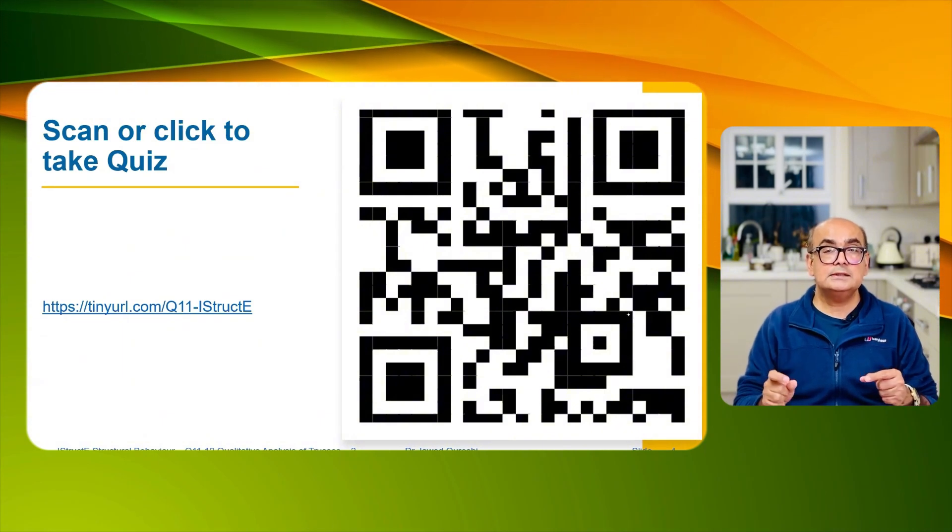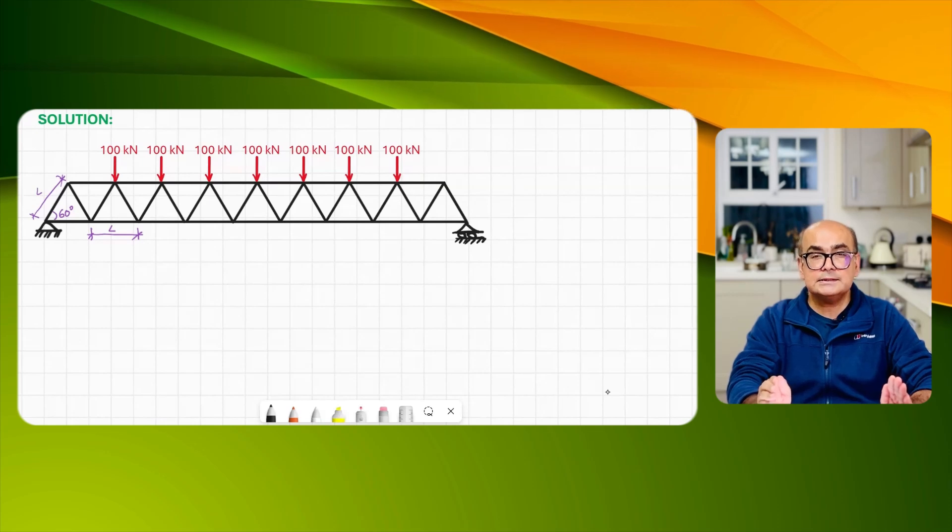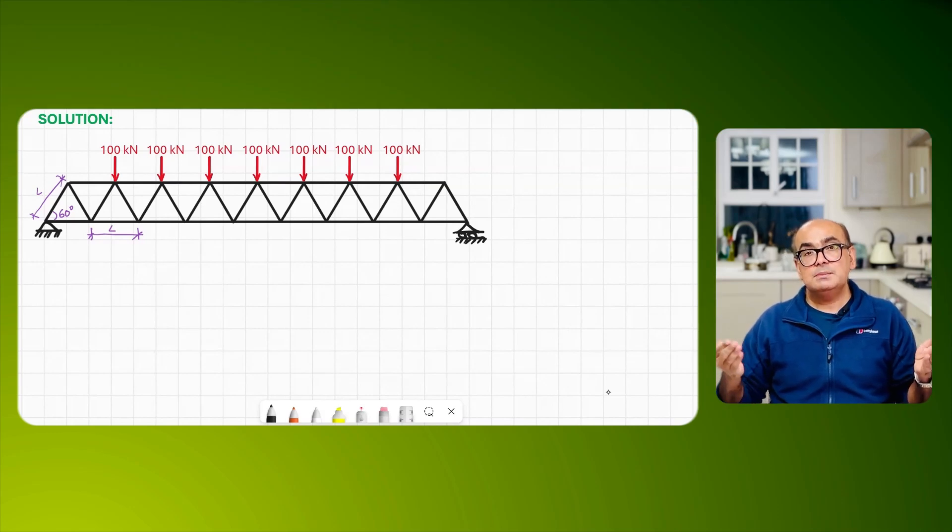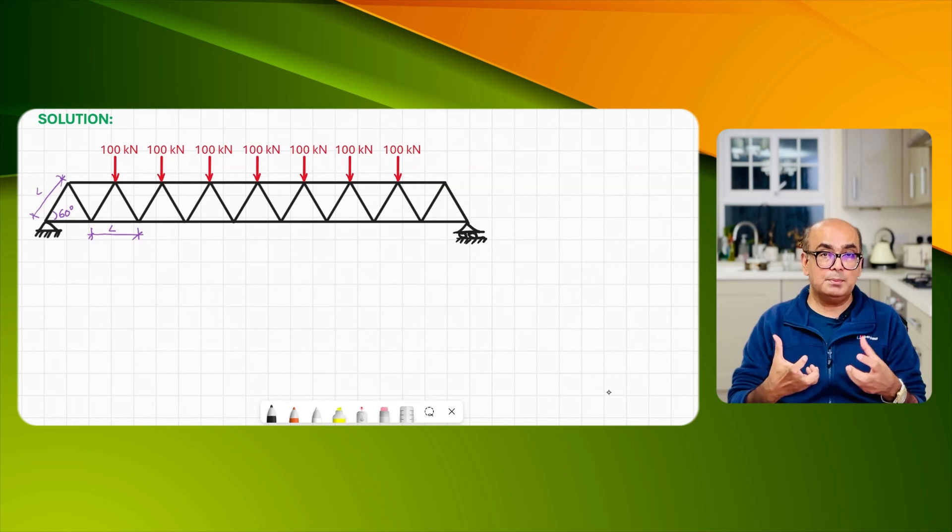The most simple thing here is that for finding reactions it's not a difficult job. We normally use the summation of vertical forces equal to zero, horizontal forces equal to zero, and summation of moment equal to zero.